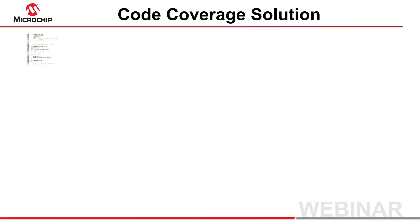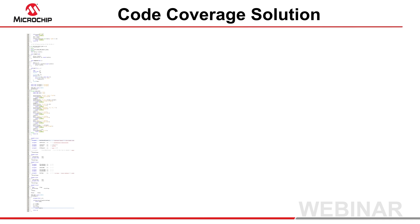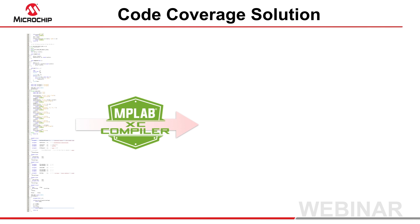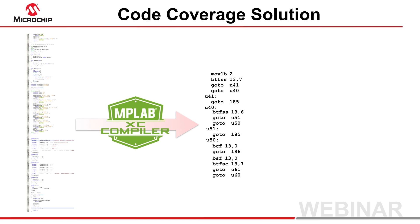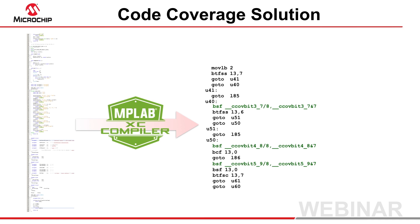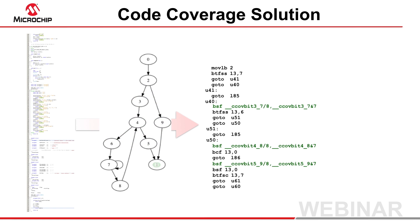Microchip now provides a code coverage solution to measure how much of your program's source code has been executed. When enabled by a special license, the code coverage feature in all of the latest MPLAB XC compilers automatically instruments your code with assembly instructions that, when executed, generate runtime data. This data can be used to verify that the corresponding source code has been executed. The compiler tool uses advanced algorithms to analyze your code structure and minimize the memory resources used by the instrumentation code, but without sacrificing the accuracy of the results.